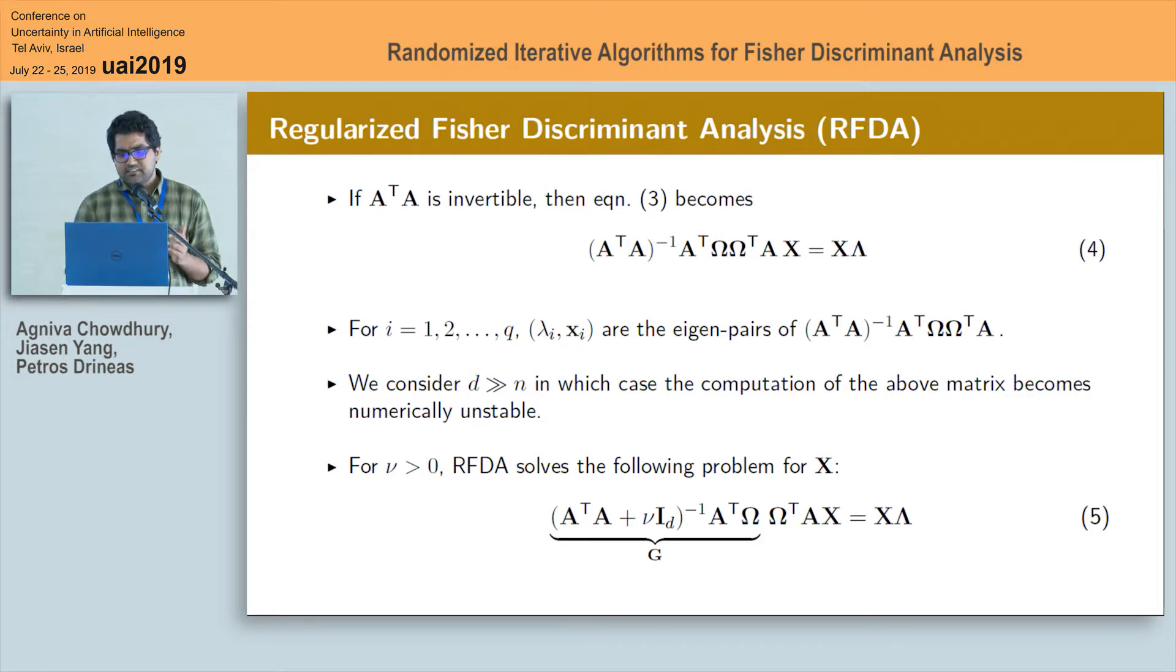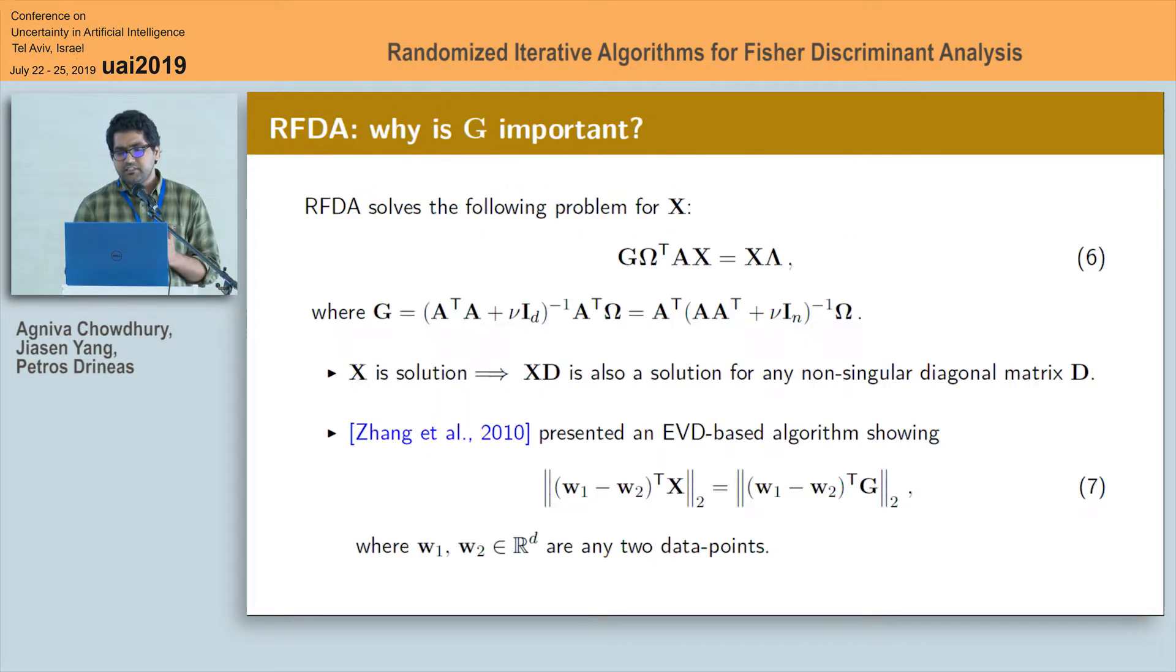Next, we can further rewrite this in terms of a matrix G in equation 6 and the matrix G is defined on the next line and both these expressions of G are equal. Now note that equation 6 doesn't have a unique solution and in particular if the matrix X is a solution then for any non-singular diagonal matrix D, XD is also a solution.